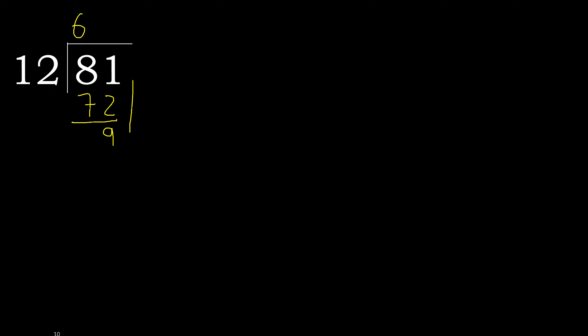Next. That is not a whole number, therefore complete with decimal point. Always complete with 0 here after the point. Bring down 0, giving 90.